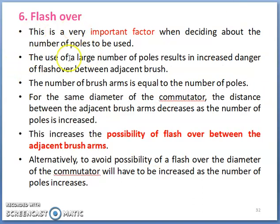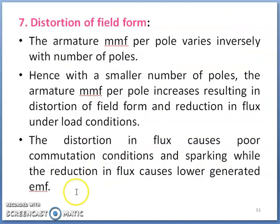Coming to flashover: this is a very important factor when deciding the number of poles. If a large number of poles are used, there is an increase in the danger of flashover between two adjacent brush arms. The number of brush arms equals the number of poles, and for the same diameter of commutator, the distance between adjacent brush arms decreases as the pole number increases. Hence, there is an increased possibility of flashover between adjacent brush arms, which can be avoided by increasing the diameter of the commutator. Coming to field form: armature MMF per pole varies inversely with number of poles, and hence distortion of flux will cause commutation problems.